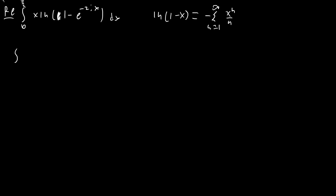So we're going to get the negative sum from n = 1 to infinity of 1/n times the integral from 0 to π/2 of x · e^(−2inx) dx. Now let's go ahead and solve this integral using straightforward integration by parts.